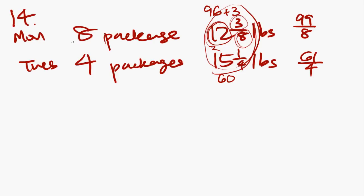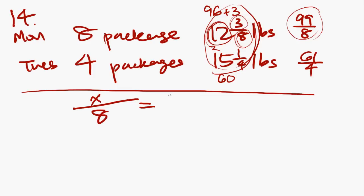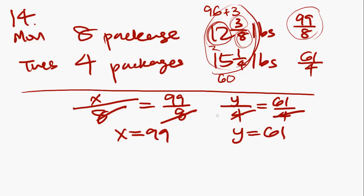On Monday, a person mailed eight different packages, and the average was 99 over 8. We can set up the formula used to calculate averages: x over 8 packages equals 99 over 8. You can kill off the two denominators and get x equals 99. Similarly, on Tuesday we had y over 4 packages equals 61 over 4, so y equals 61. This tells us that when you add all eight packages together, you get 99. When you add all four packages together from Tuesday, you get 61.